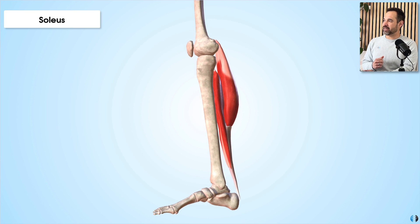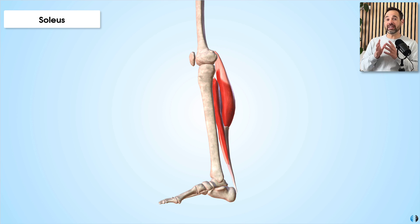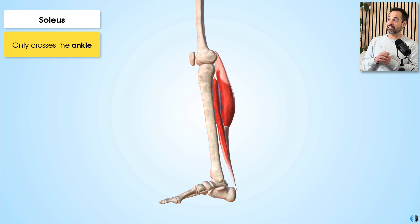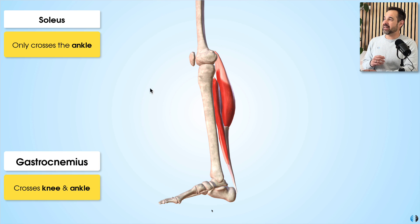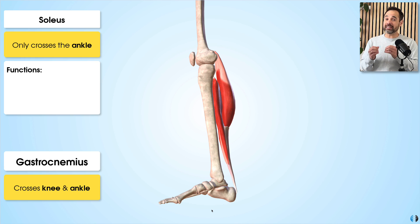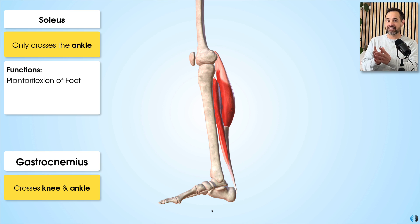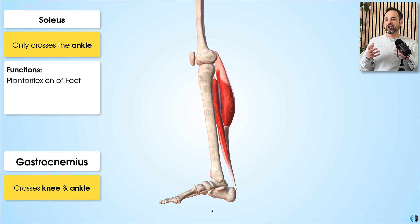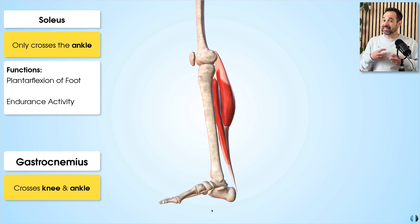Unlike the gastrocnemius, the soleus only crosses the ankle joint — not the knee joint, as you can see on this diagram. That means the soleus has no role in knee movement and is exclusively a plantar flexor of the foot. While the gastrocnemius has that more explosive plantar flexion function, the soleus is more of an ongoing endurance and stability muscle. Its main role is to sustain postural stability and repeated plantar flexion over a long period of time, such as when walking or standing.